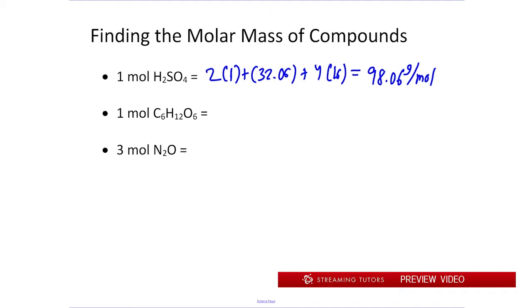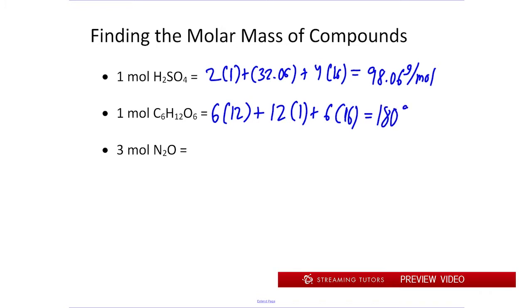We do the same thing for C6H12O6: six carbons with a molar mass of 12, plus 12 hydrogens with a molar mass of 1, plus six oxygens with a molar mass of 16. Doing that addition, we get 180 grams per mole. Then finally for N2O, we first find the molar mass of just one mole of N2O: 2 times 14 for nitrogen, plus 16 for oxygen, which gives us 44 grams per mole.